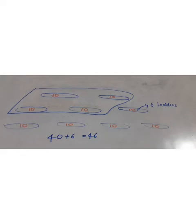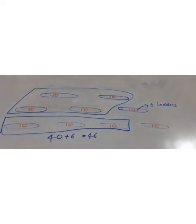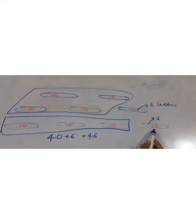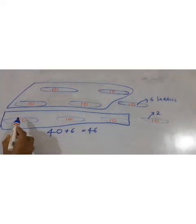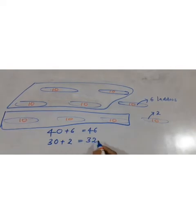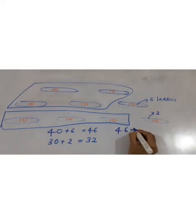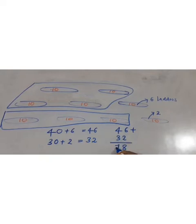Then in the evening he ate all the laddos in 3 plates and 2 more from another plate. In the evening: 10 plus 10 plus 10 equals 30, plus 2 from this plate, so 32 laddos in the evening. Now adding morning and evening together: 46 plus 32 — 6 plus 2 is 8, 4 plus 3 is 7 — so he ate 78 laddos in all.